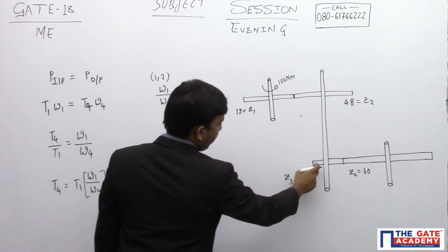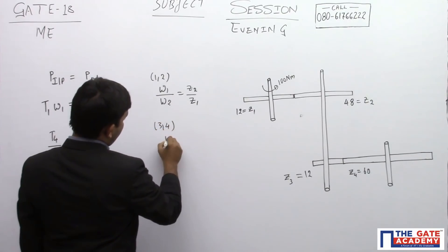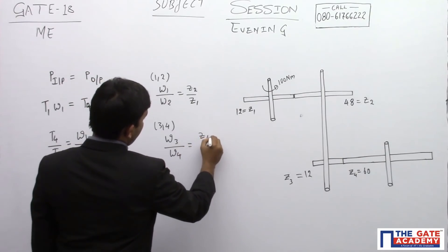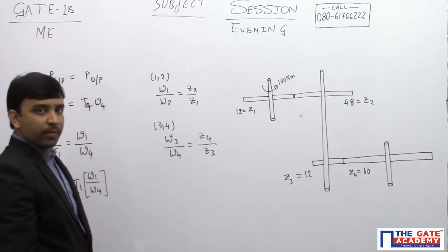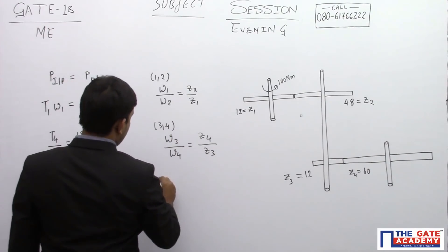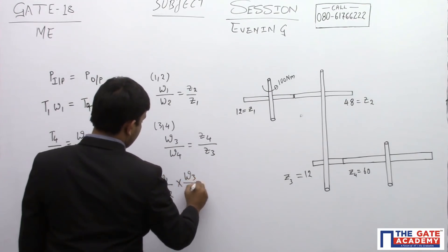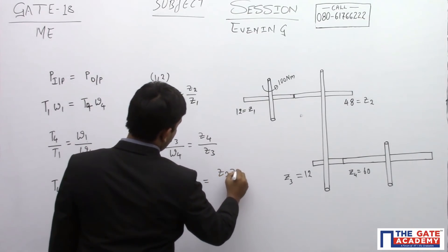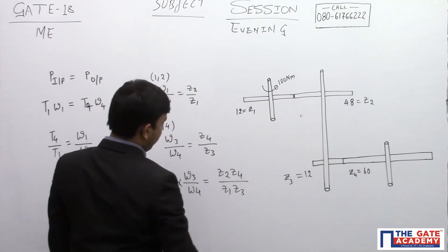Similarly, gears 3 and 4 are in mesh. For gears 3 and 4: ω3 / ω4 = Z4 / Z3 — number of teeth on gear 4 to the number of teeth on gear 3. To get the speed ratio, I multiply these two equations: (ω1 / ω2) × (ω3 / ω4) = (Z2 × Z4) / (Z1 × Z3).